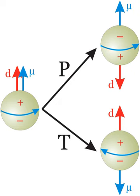This fine-tuning of the θ angle, which is naturally expected to be of order 1, is the strong CP problem.